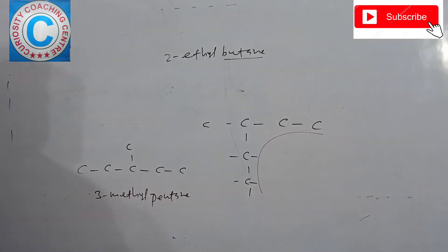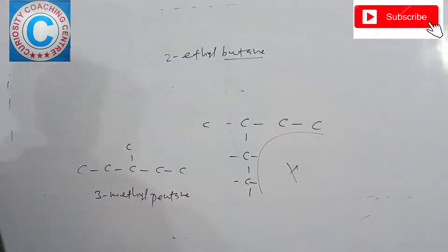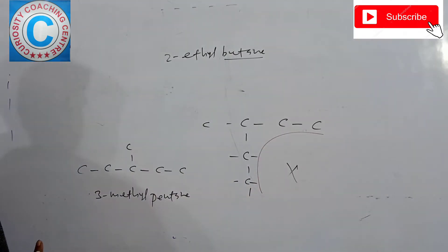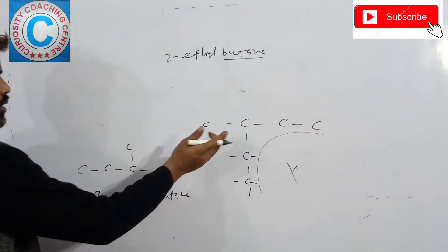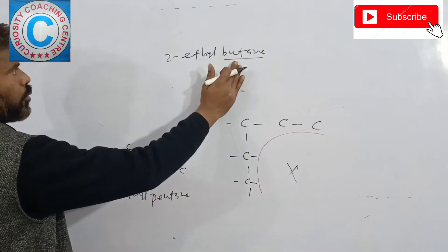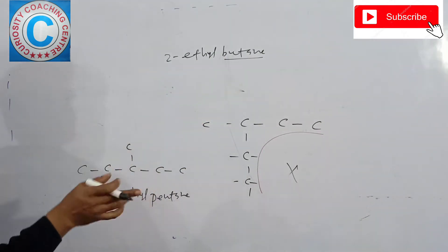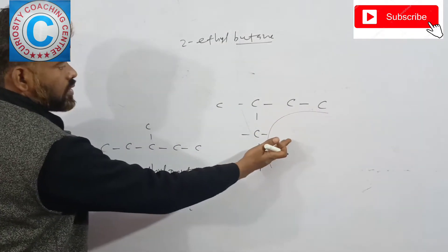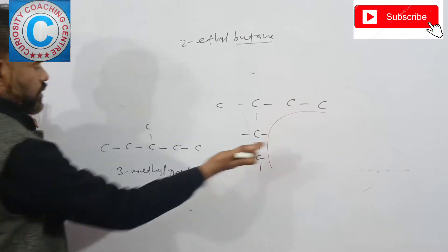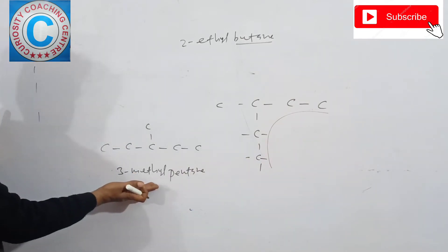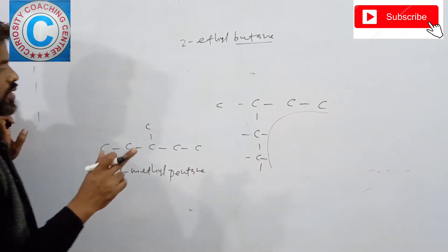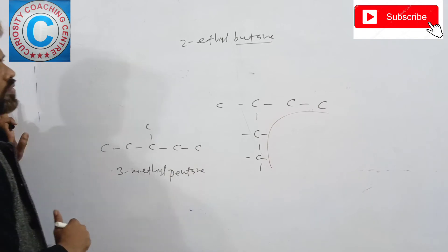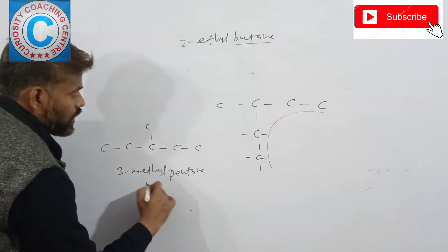So the name 2-ethyl-butane is not correct — it is not a valid name. 2-ethyl-butane is actually 3-methylpentane, which is an isomer of hexane. But the name 2-ethyl-butane itself is not possible — the correct name is 3-methylpentane.